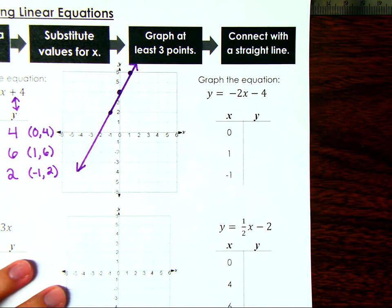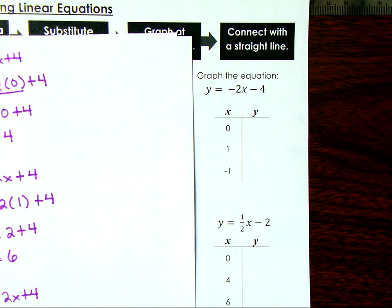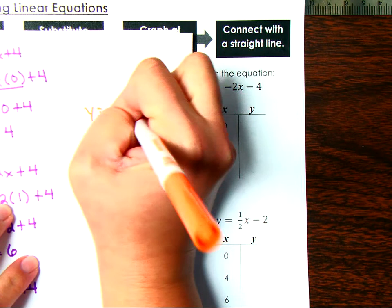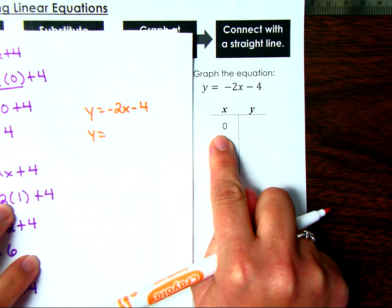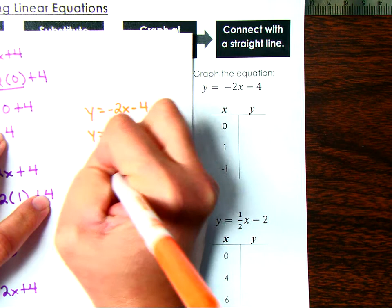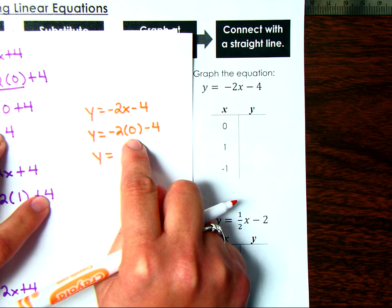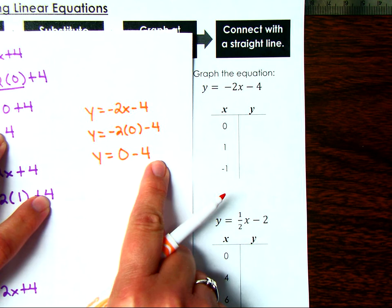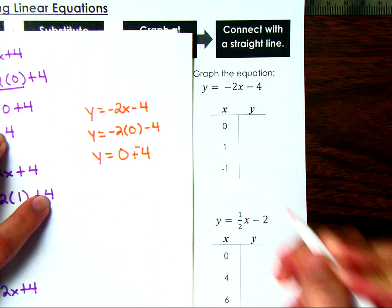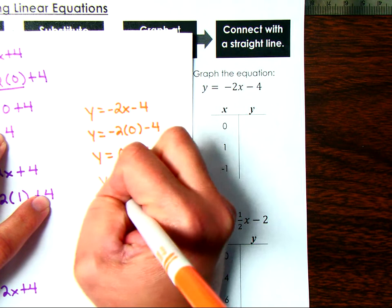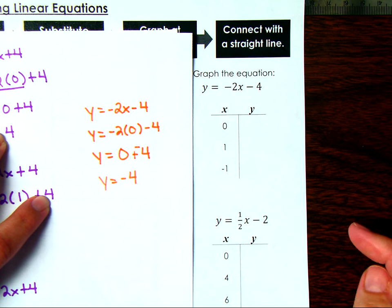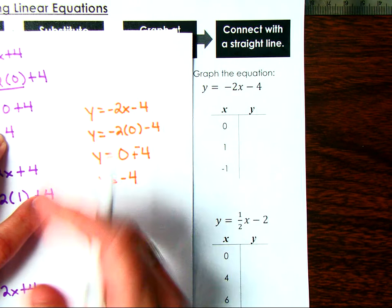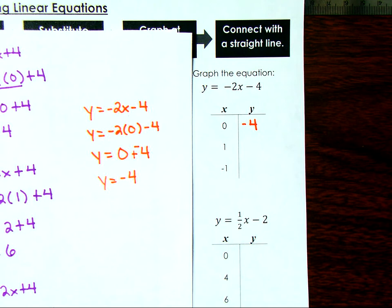Now let's look at y equals negative 2x minus 4, using a different color to represent that. When x is 0, we substitute: negative 2 times 0 minus 4. Anything times 0 is 0 — that's the zero product property. And 0 minus 4: when we see subtraction, we add a line and change the next sign, so 0 plus negative 4 equals negative 4. Or think of the number line: starting at 0 and going 4 to the left lands at negative 4. So when x is 0, y is negative 4.